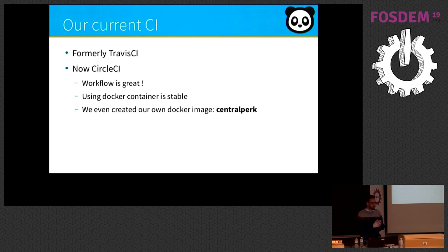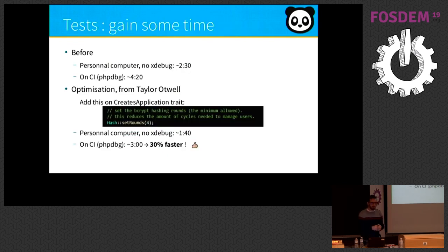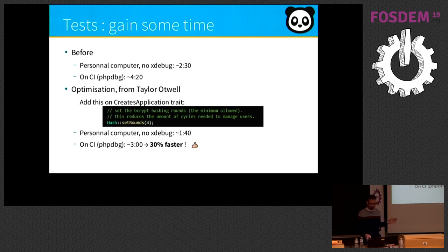Our CI uses CircleCI, and its workflow is great. We use a Docker image, and we created a Docker image called 'central-pack' to test Monica. We have two workflows: a build-and-test workflow and a deploy workflow, and it works very well. A word about a recent improvement from Taylor Otwell: just by adding one line on the CreateApplication trait, we gained about 30% time reduction on running unit tests. It's a very nice optimization.